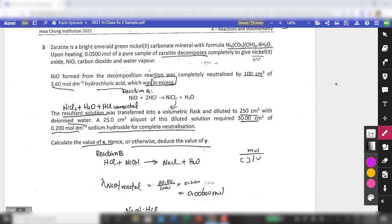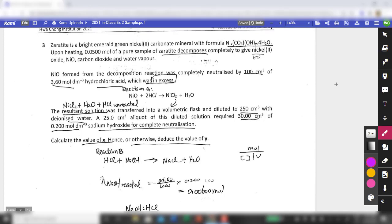For question three, I noticed that there is a huge improvement from the previous exercise one. I think that's very good. So keep up with good efforts. So I'll just do a very quick debrief. So you have this mineral known as zeratite. So bright emerald green nickel 2. I think this statement is important here. So it means that it contains nickel 2+ carbonate minerals with this particular molecular formula. So you were told that upon heating 0.05 moles of it decompose to give three things. It gives you nickel oxides, NiO. It gives you CO2. And it gives you water vapor.